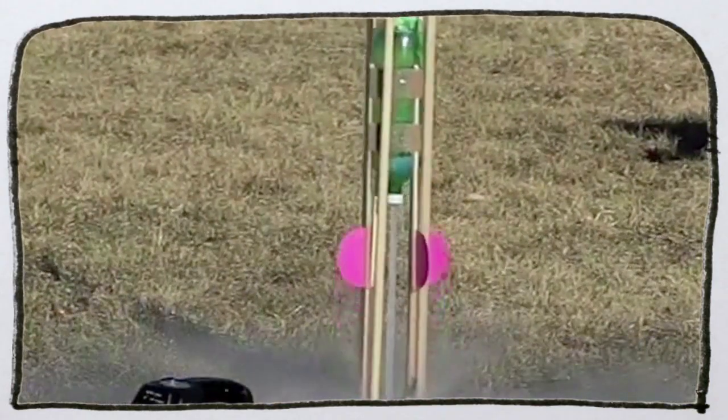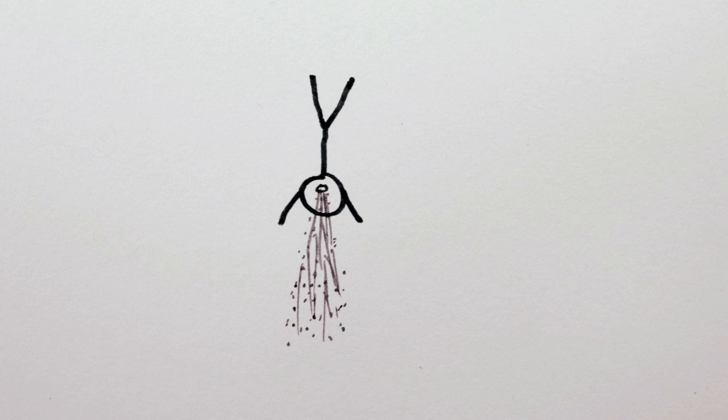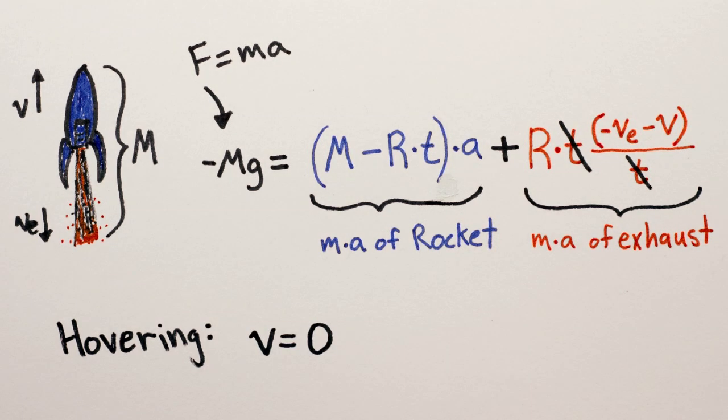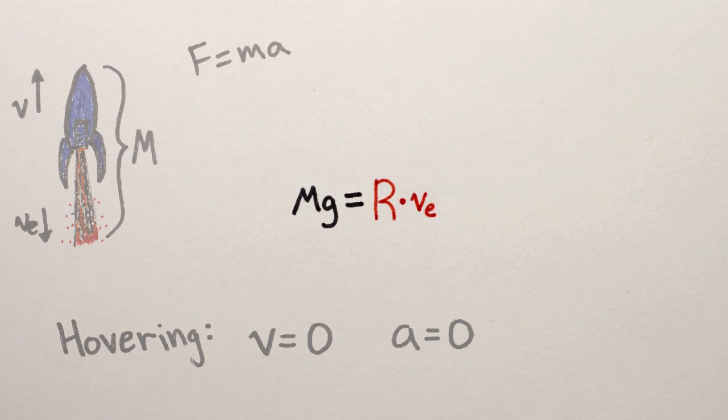Now suppose you're launching a water bottle rocket, or trying to levitate by vomiting. How much fuel, which in this case is just water or milk, do you have to expel to take off? That is, to just barely beat gravity and begin to hover. Well, if you're just hovering, that means your velocity is zero, and your acceleration is zero too. So all the parts of this complicated equation having to do with the rocket go away, and we're left with a much simpler equation describing just the exhaust.